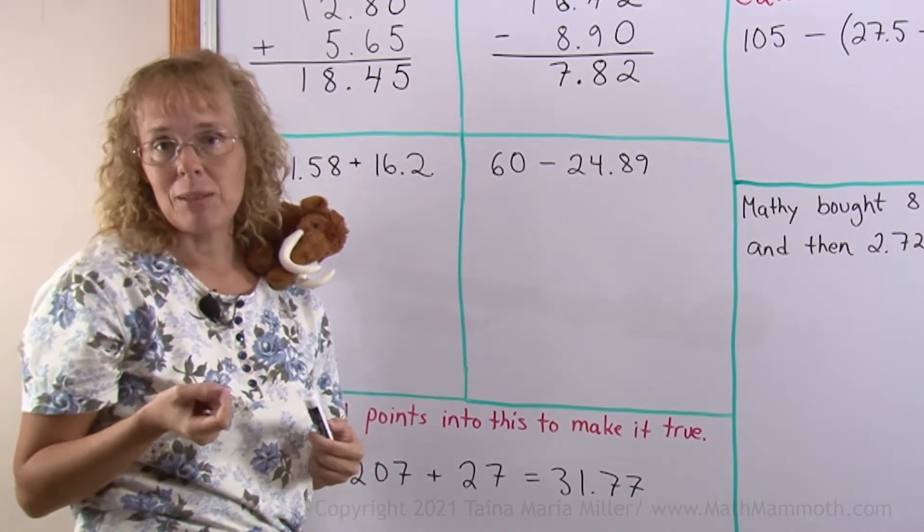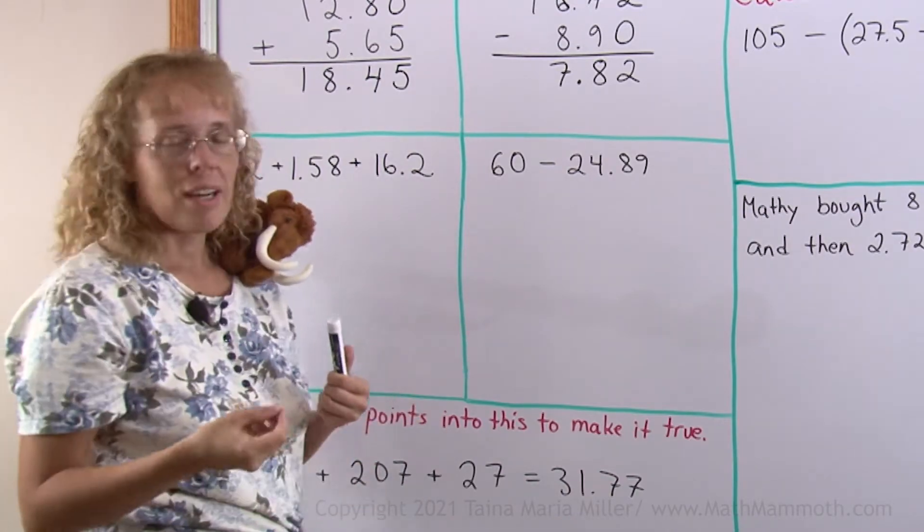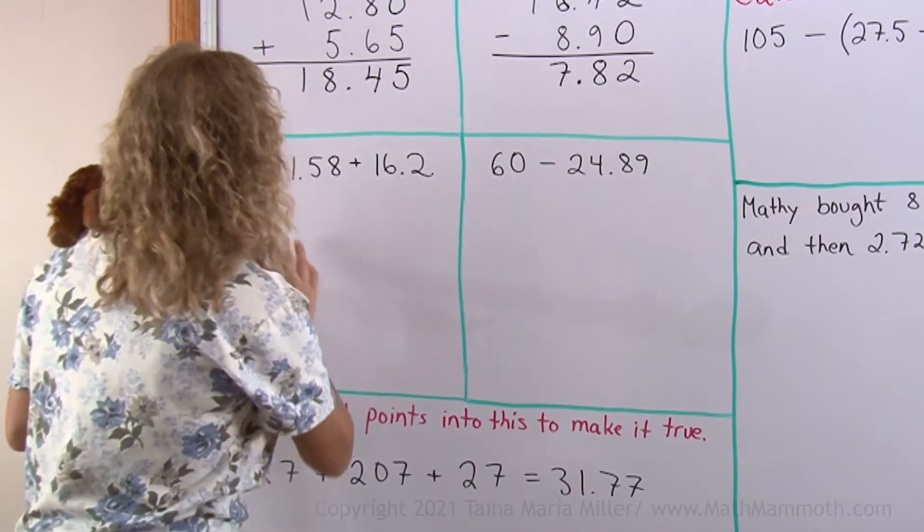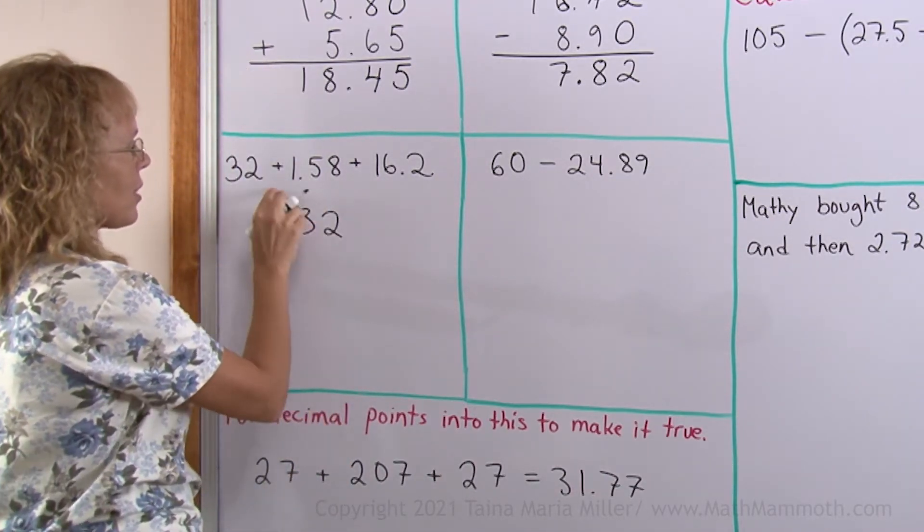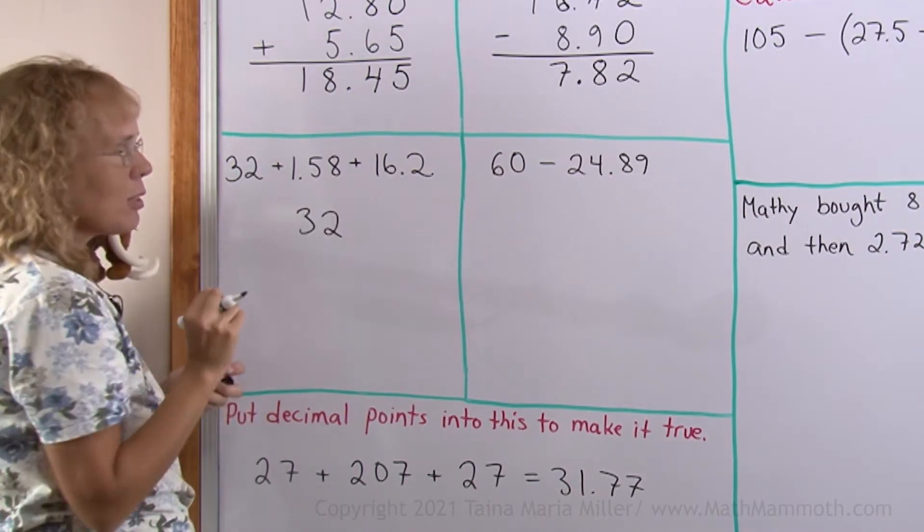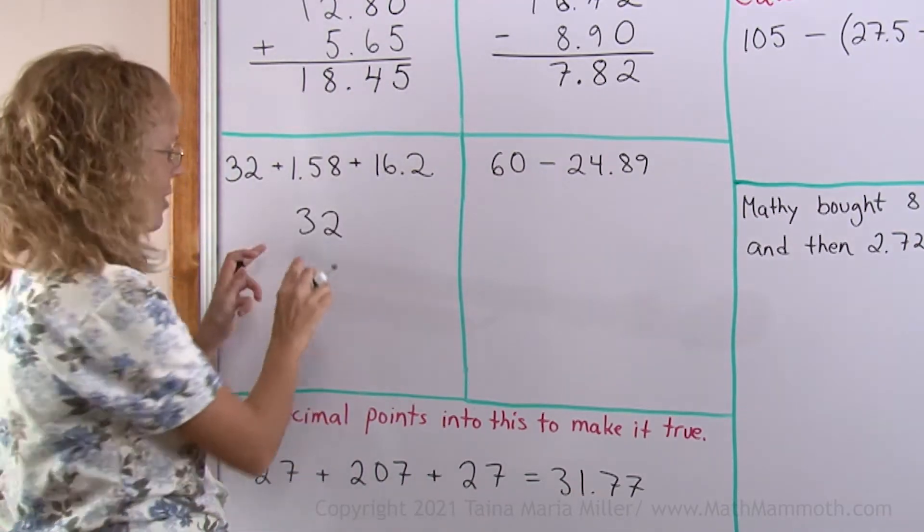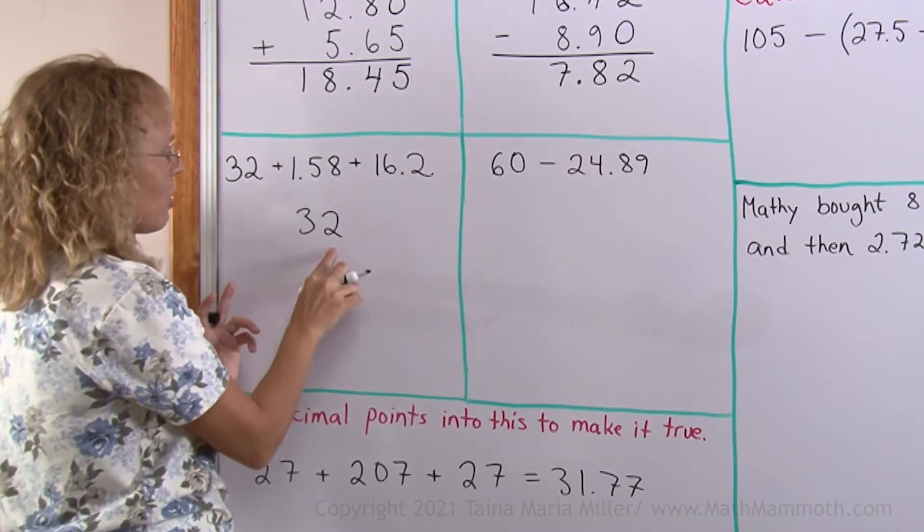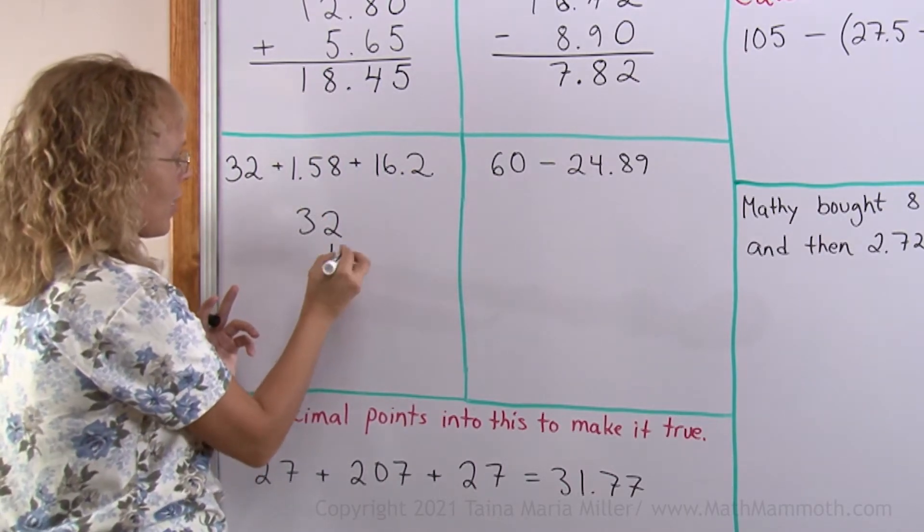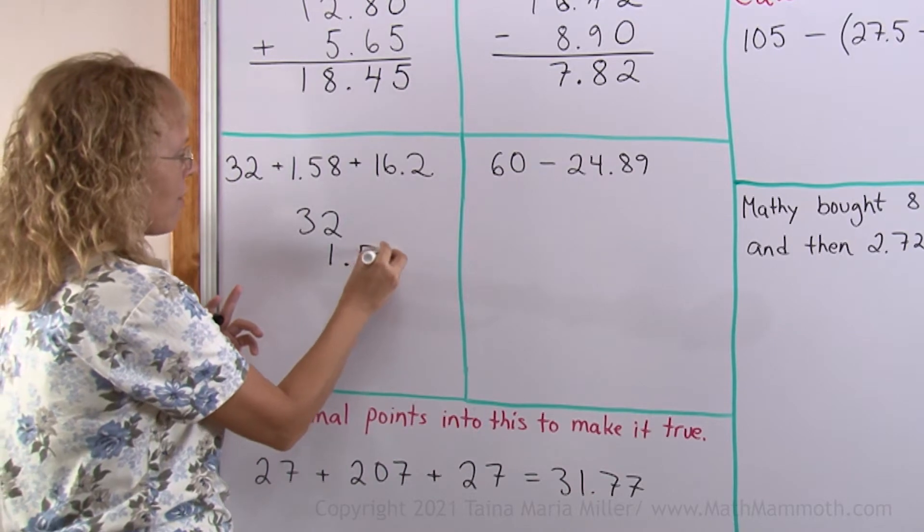Now these next two problems are basically just exercises to practice lining up your numbers. I have a sum here to add thirty-two plus one point five eight. Now where does the one go and five and eight under the thirty-two? One goes in the ones column here. Then comes the point and five eight.